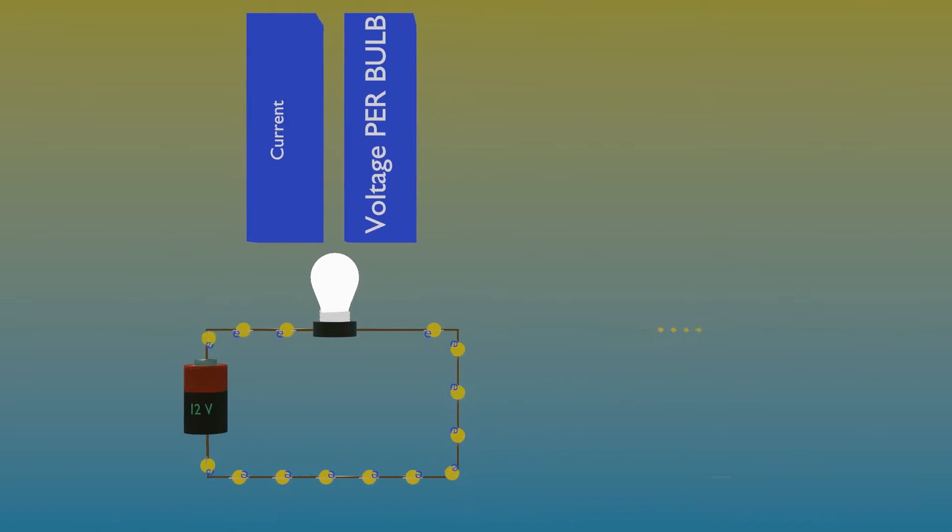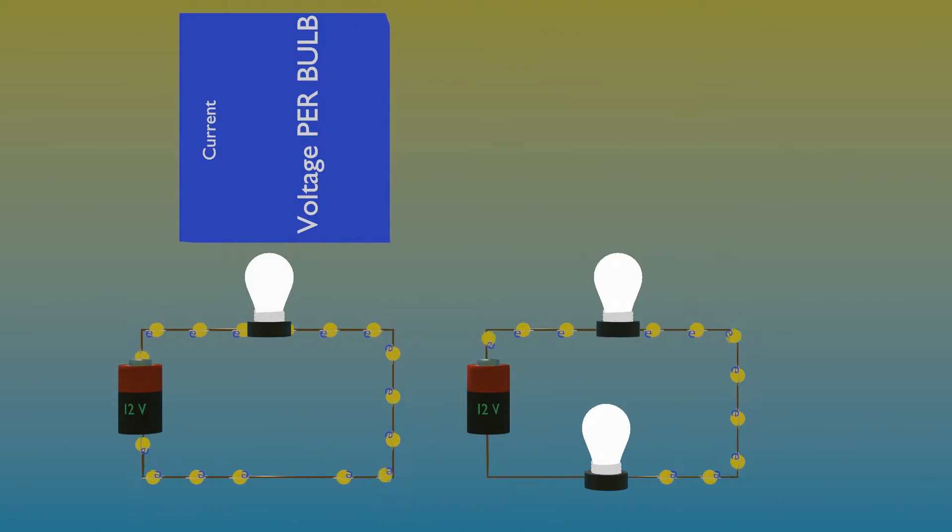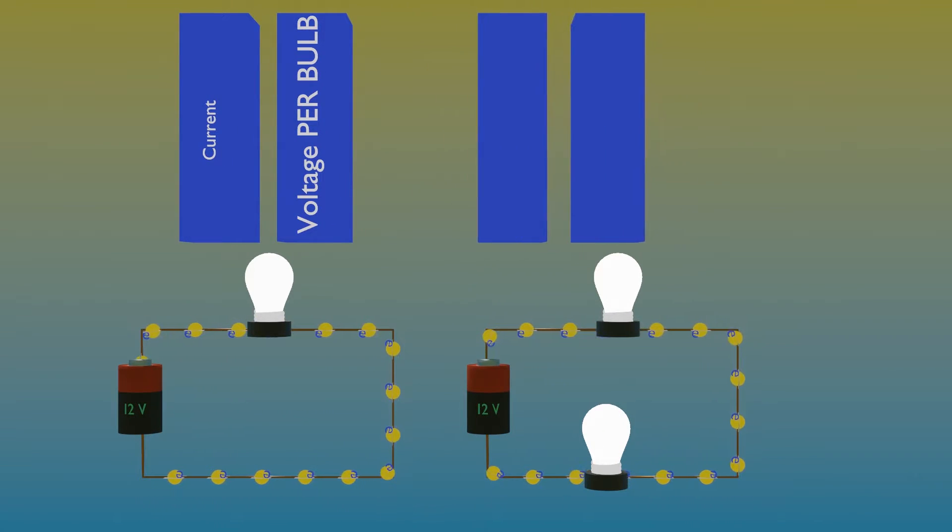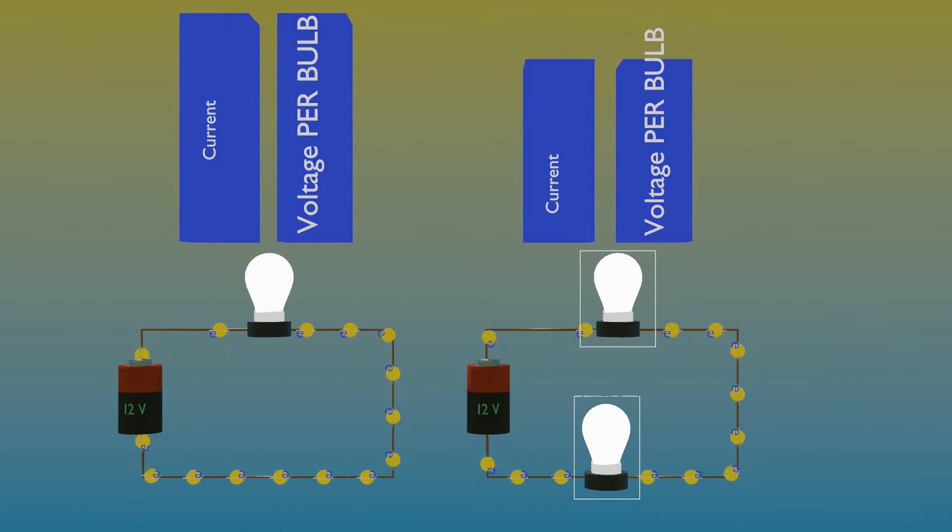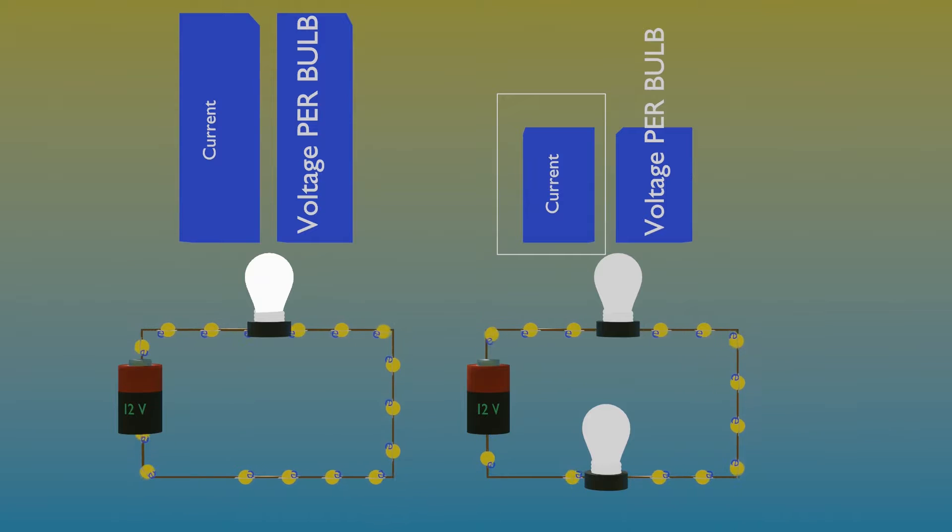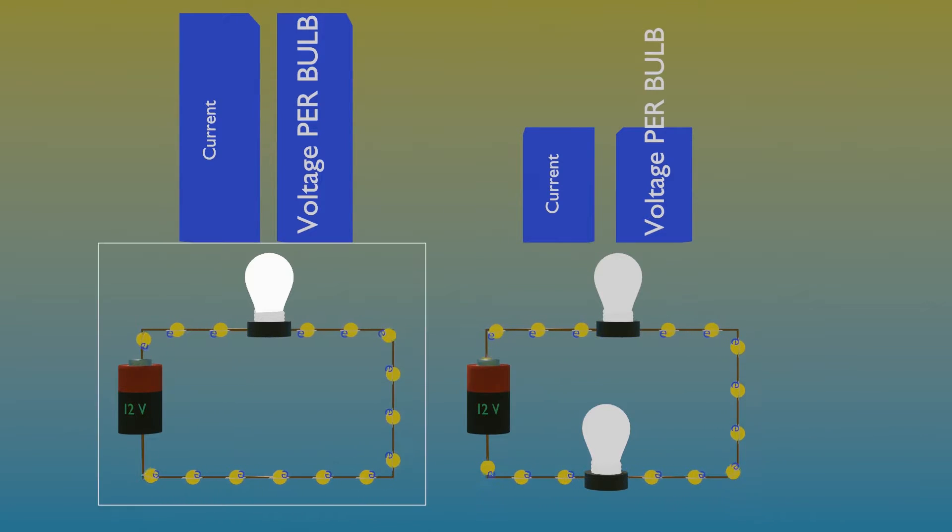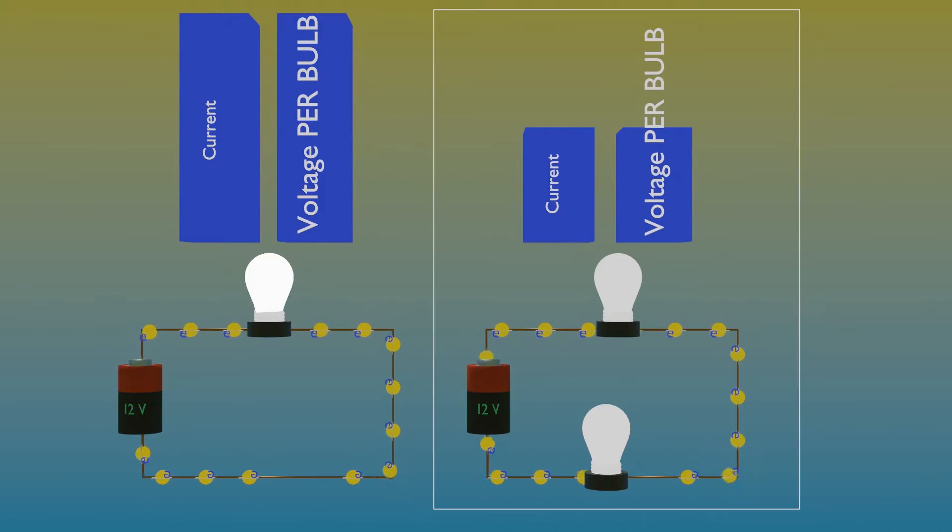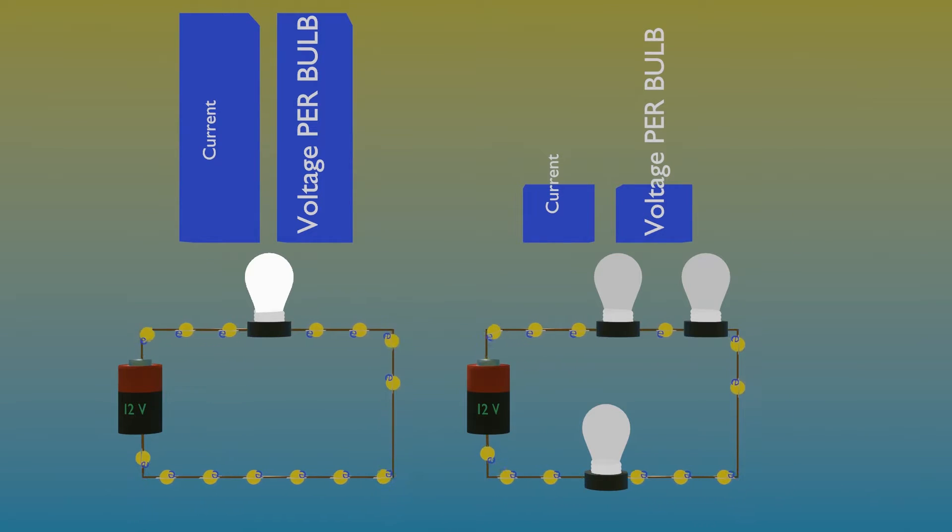Light bulbs resist the flow of electrons. When we connect multiple light bulbs in a series to a battery, the current in the circuit is less than if we just connected one bulb to the battery. Since the total voltage is the same and the current decreases with the number of bulbs, the overall power supplied also decreases with the number of bulbs in the circuit.